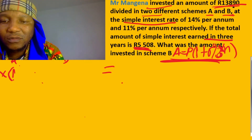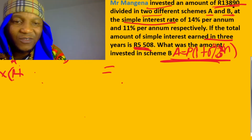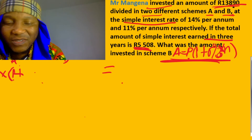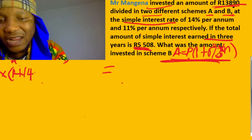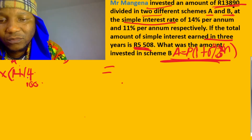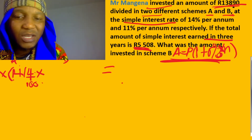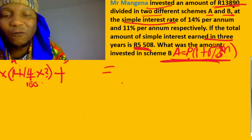For Scheme A: the principle is x, and then we have 1 plus the interest rate for A, which is 14 percent. You can write it as 14 over 100. Then multiply by the time, n equals 3 years.